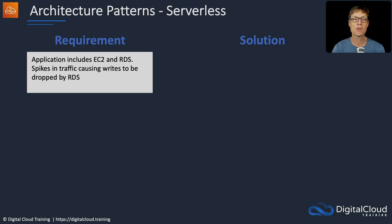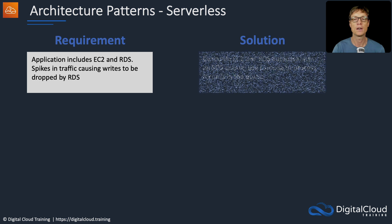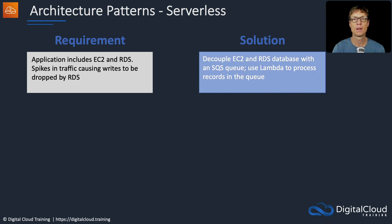We have a requirement: an application includes EC2 and RDS, and spikes in traffic are causing writes to be dropped by RDS. In this case, you might decouple EC2 and RDS with an SQS queue, and then use Lambda to process records in the queue.